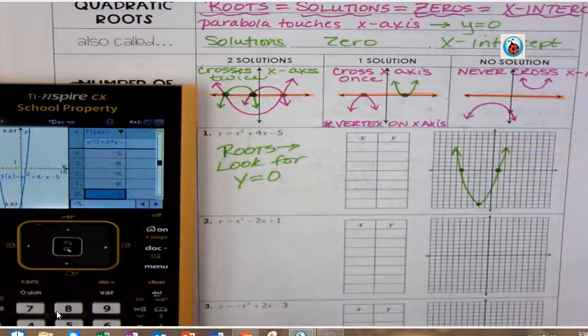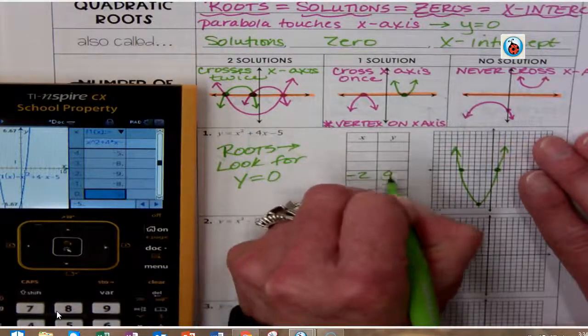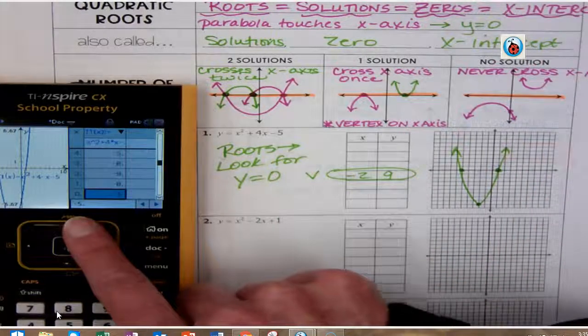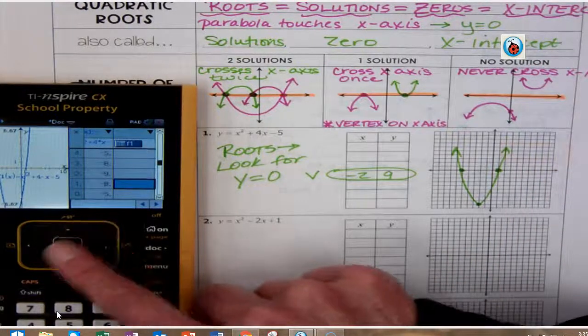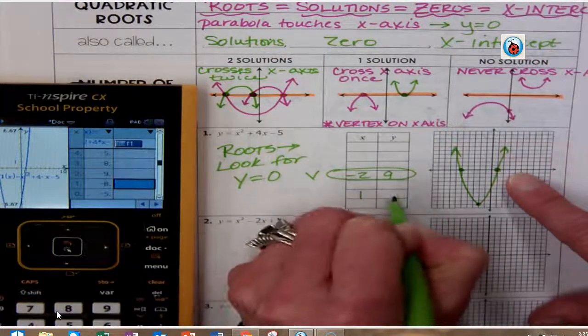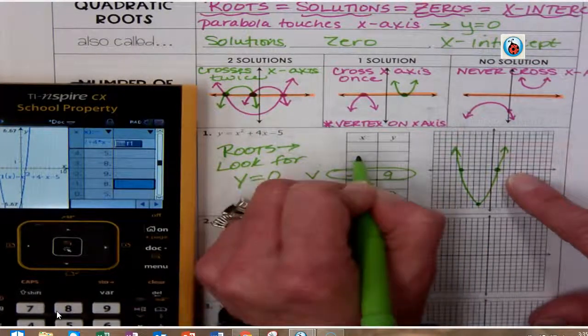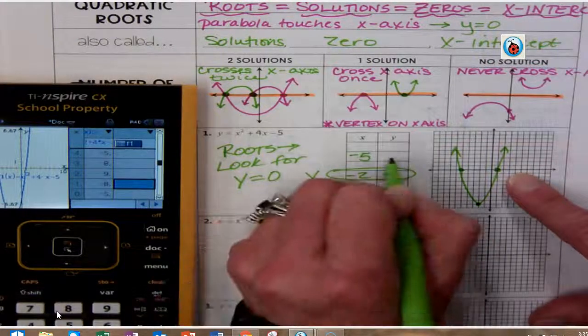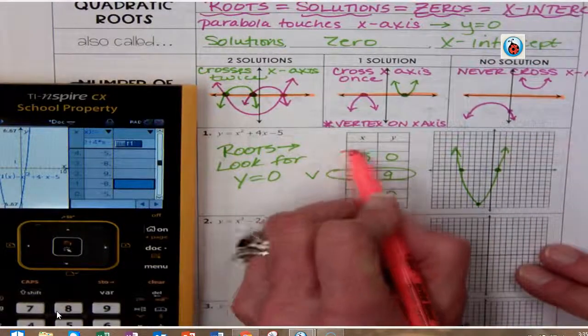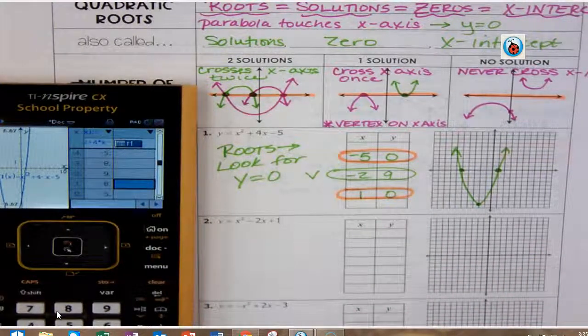So I would suggest that when you write your table, you put your vertex in the middle. And you can go ahead and put your zeros in, and this is going to be negative 5, zero. And I would highlight those. I would circle or highlight anytime you have a zero in the y column—that's important. All right, hope that helps.